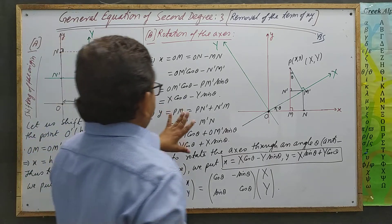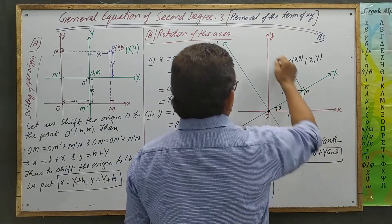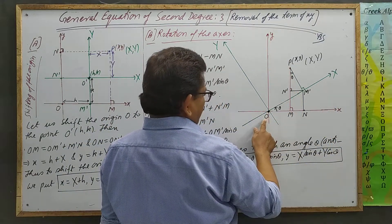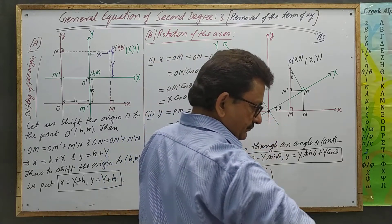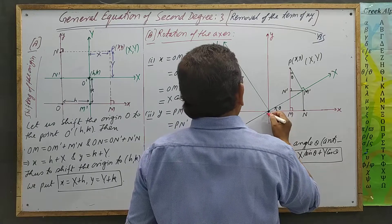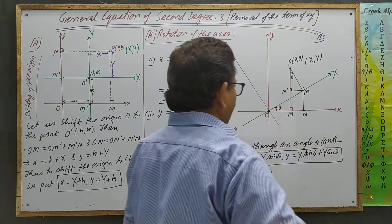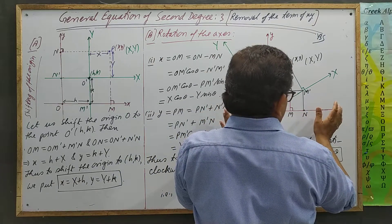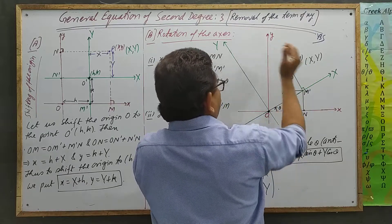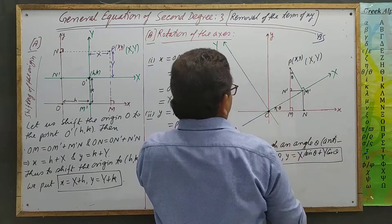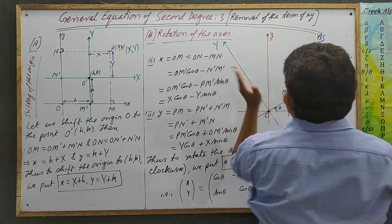Now, rotation of the axes. The small x-axis and small y-axis are drawn in red color with origin O. Without moving the origin — keeping the origin fixed at its place — we rotate the axes by angle θ in the positive (anti-clockwise) direction. So now one axis has come here, and at the same theta angle the other axis has come here.